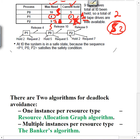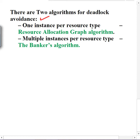We have two algorithms for deadlock avoidance. If we have only one instance per resource, we use the resource allocation graph algorithm, since it is best used for detecting cycles with single-instance resources. If we have multiple instances per resource — for example, ten printers or five drives — then we use the banker's algorithm.